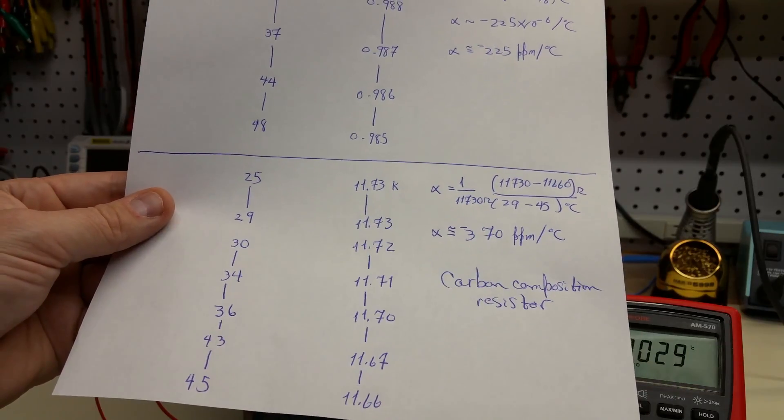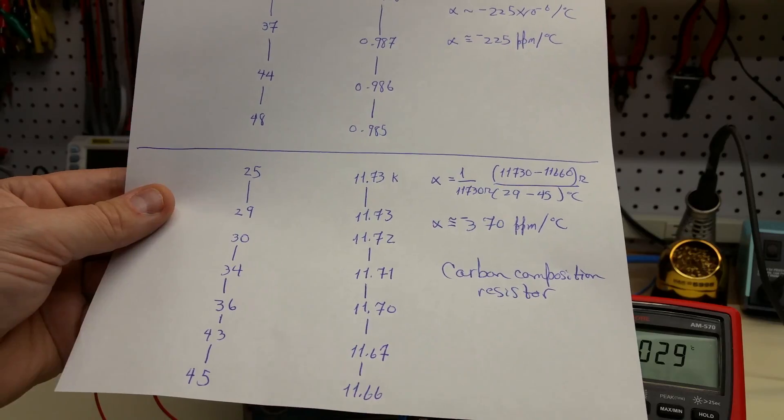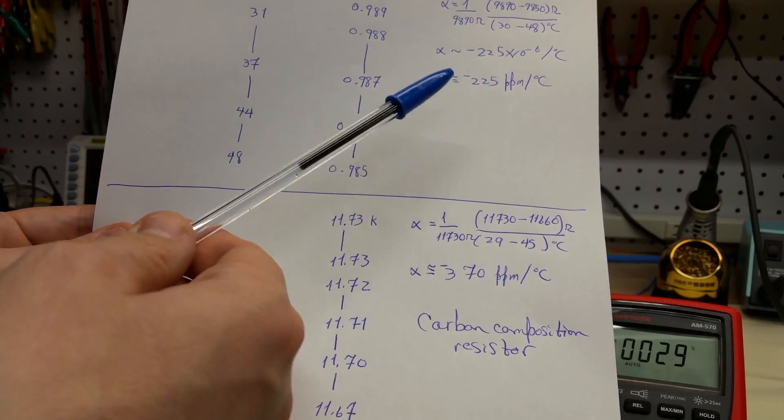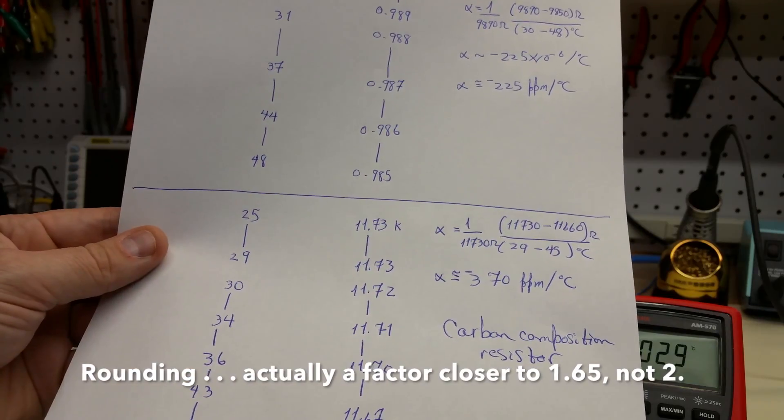So you can do the calculation and here you get negative 370 parts per million per degree C. So almost a factor of two higher than the carbon film resistor.